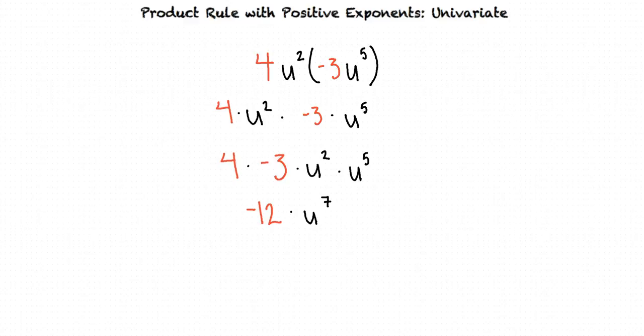We can now rewrite our final answer without the multiplication sign in between and just the negative 12 and u raised to the seventh next to each other. Why don't we try another example?